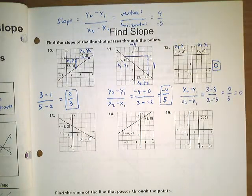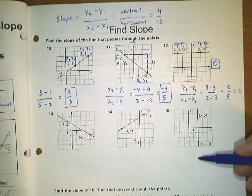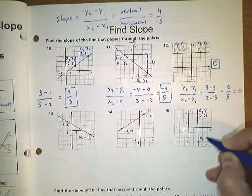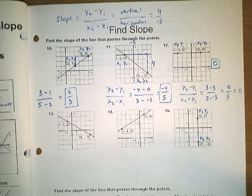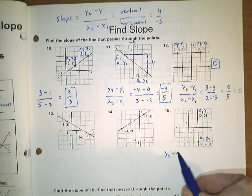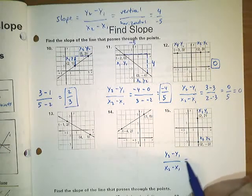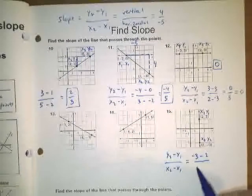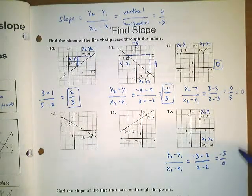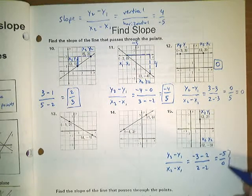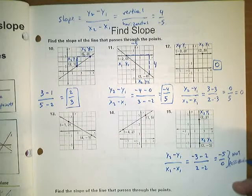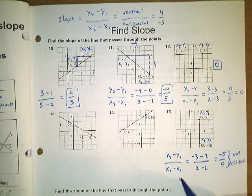The only other one I wanted to talk about on this page is number 15 — this is a vertical line. When you try to solve this using x sub 1, y sub 1 and x sub 2, y sub 2, we don't get a numerical answer. If you try it on your calculator, it will give you an error message — negative 5 divided by 0. You cannot divide by 0; this division is not possible. So that's why when anyone asks you what the slope of a vertical line is, you simply say it is undefined.